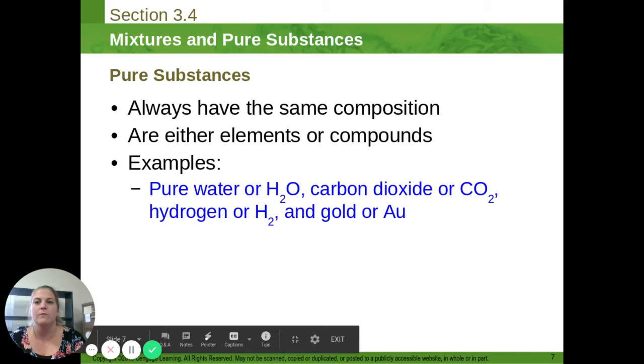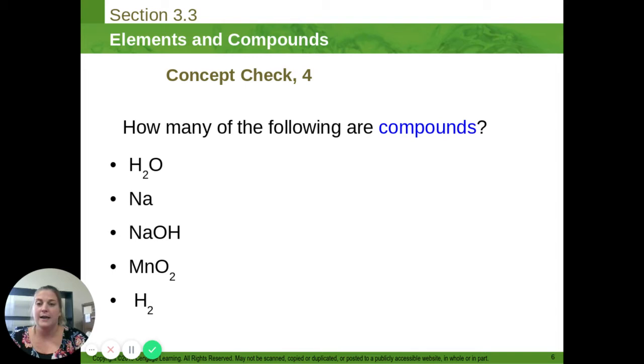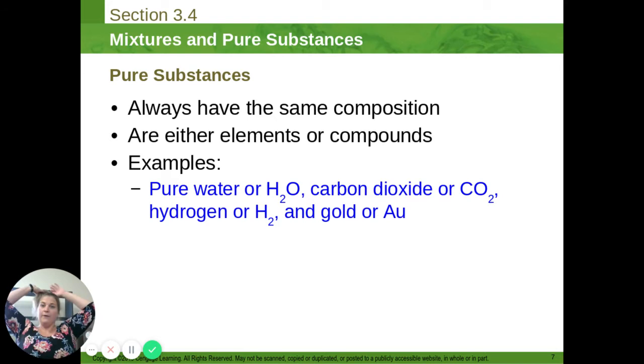So those are the basics: elements versus compounds. Next, we're going to look at pure substances versus mixtures. If we have a pure substance, we have all of one type of thing. What that means is a glass of water, that water is a pure substance. Everything in that glass has the same chemical formula. They're all H2O. If I have a block of dry ice, I have all carbon dioxide, that is a pure substance. If I have a block of gold, also a pure substance. Every atom in that block is gold. So it just means that no matter what sample I get from my substance, it will have the same chemical formula.